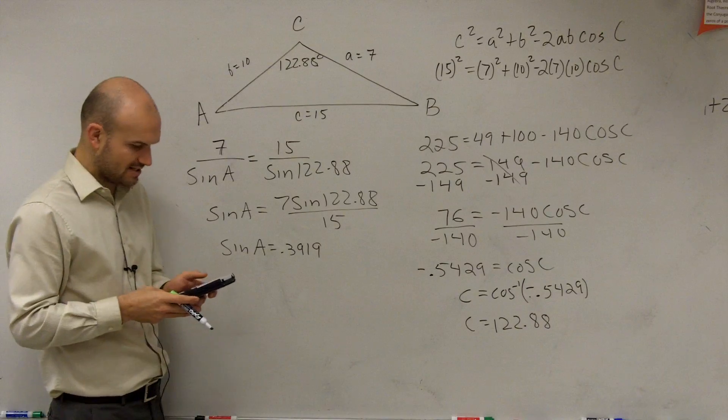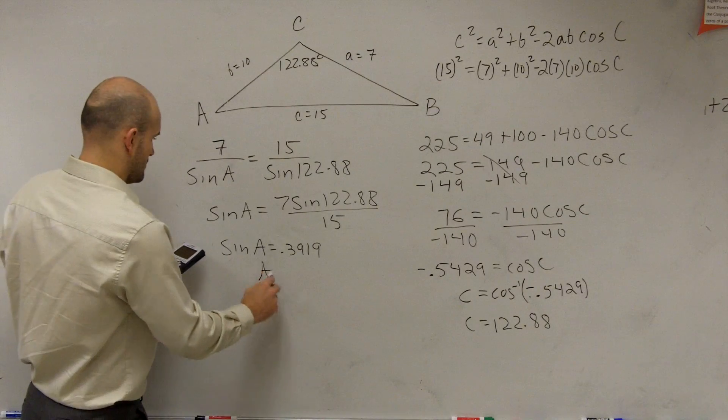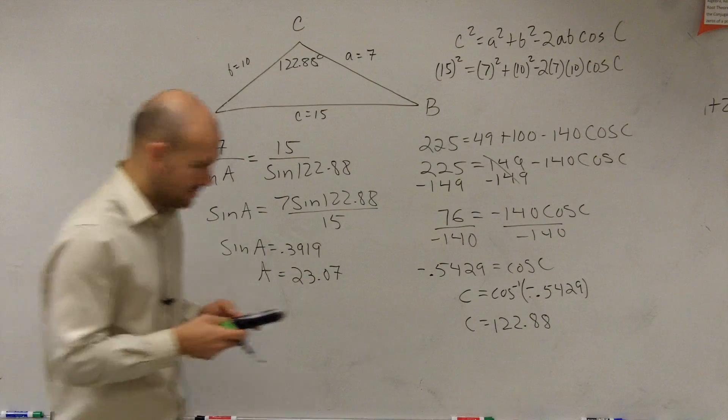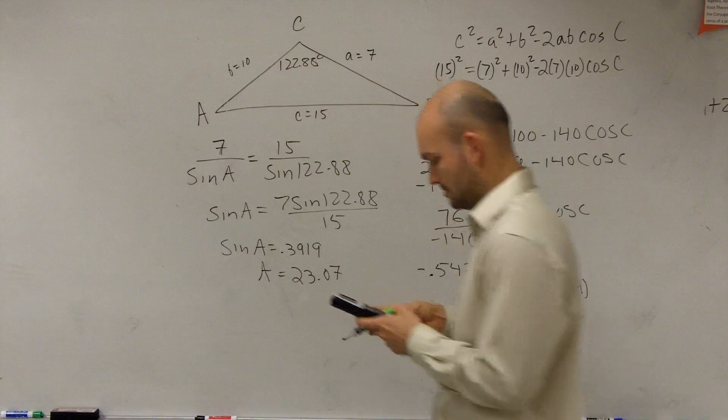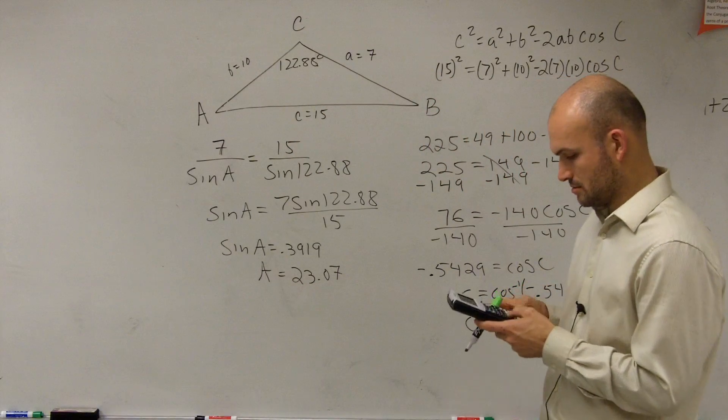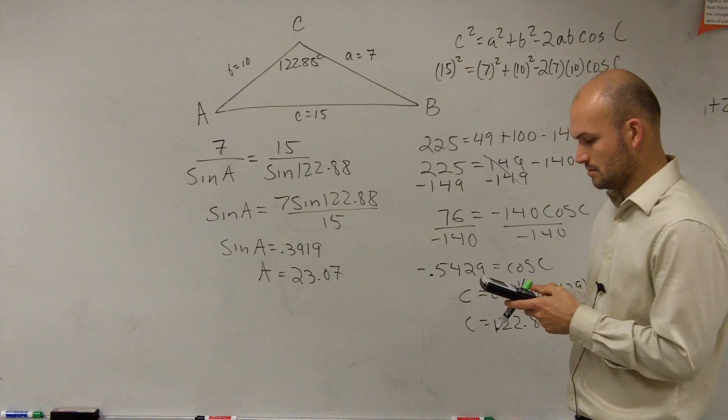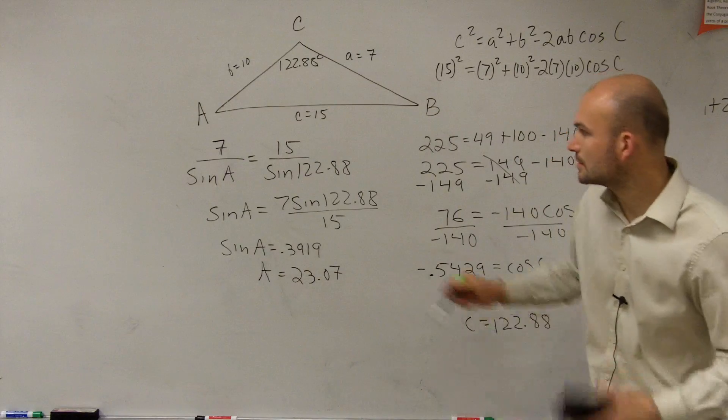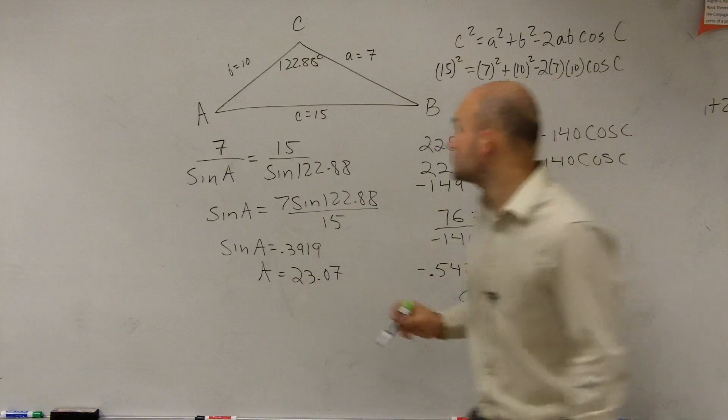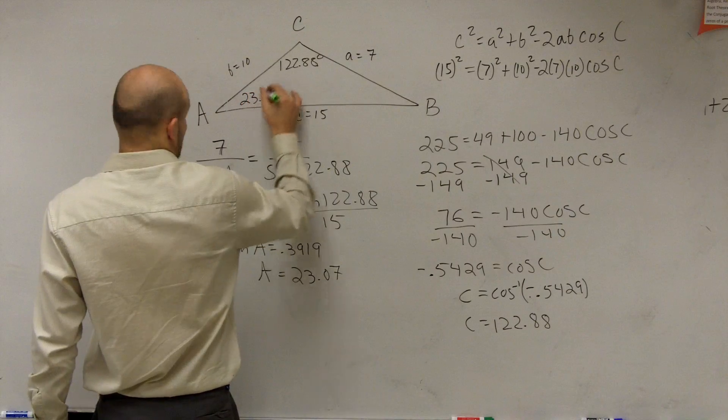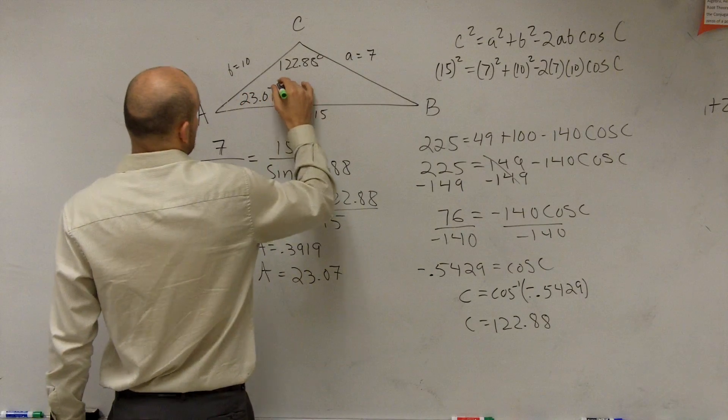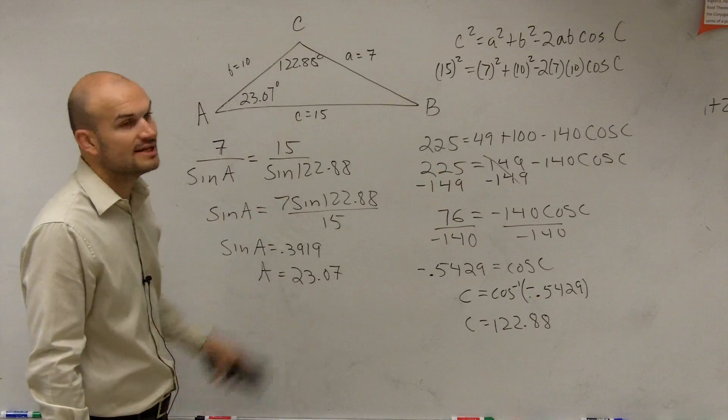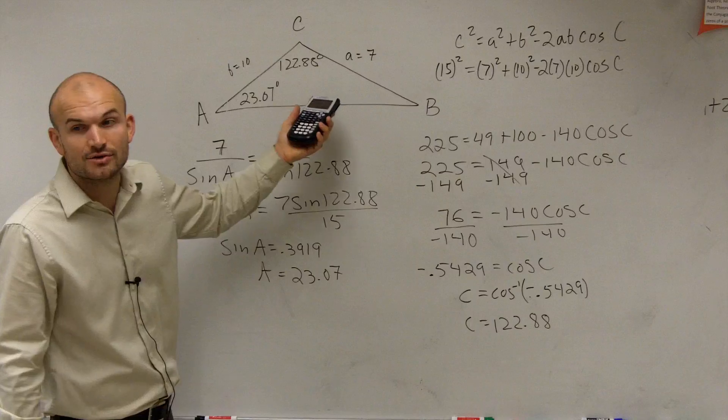And I take inverse sine, second answer. And I get A equals 23.07. So then we get A is going to be 23 degrees 0.07, which obviously we know it has to be smaller than C. And now we're just going to evaluate for B.